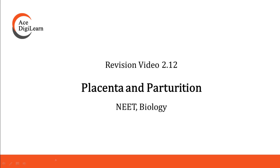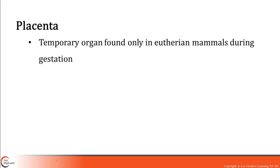Moving on to placenta and parturition. What do you mean by the term placenta? It is a temporary organ that is found only in eutherian or placental mammals during the time of gestation. It is a physiological and anatomical connection between the developing fetus and the mother.